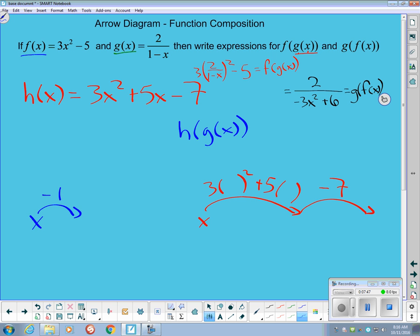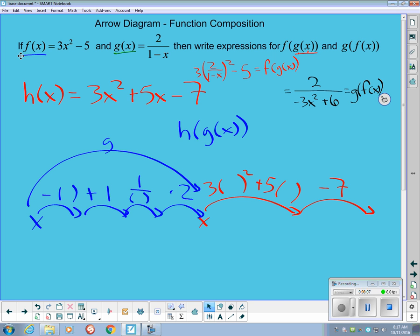Change sign, and added one, reciprocated, and multiplied by 2. And so there's my function g again, and here's my function h at the end.